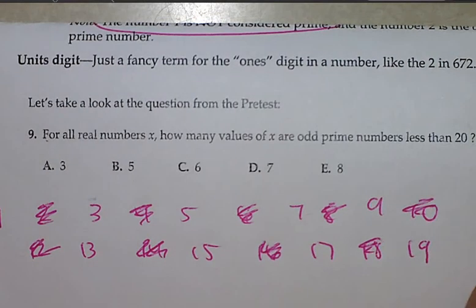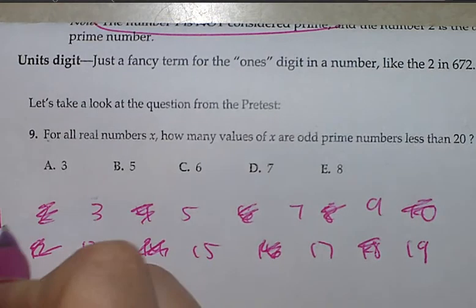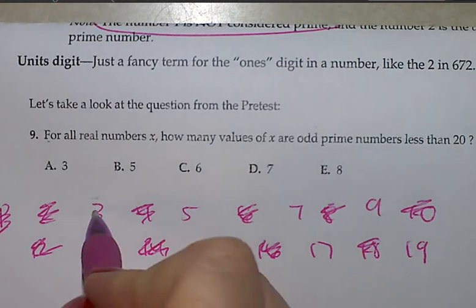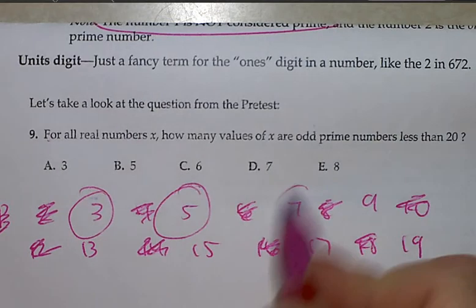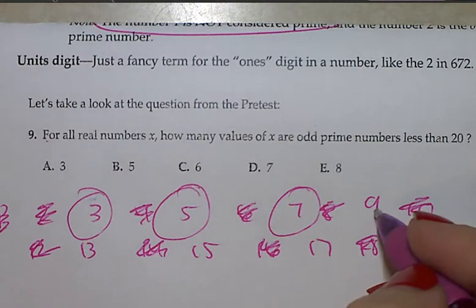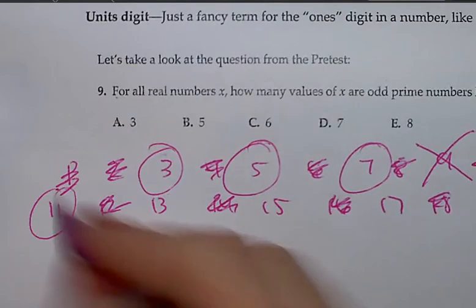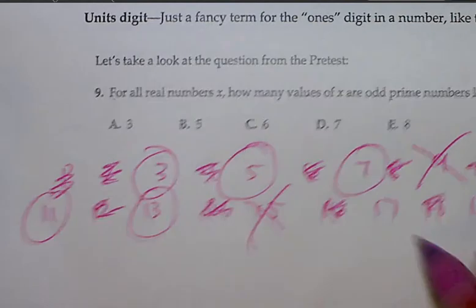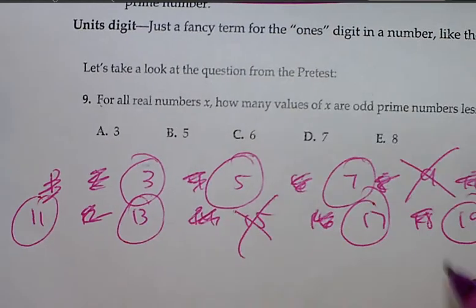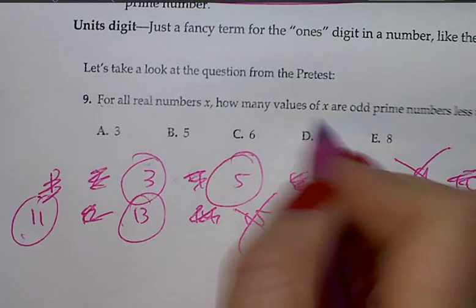And of the remaining numbers, I'm going to circle if it is going to be a prime number. We just stated 1 is not prime. Is 3 prime? The only way to achieve 3 is 1 times 3. 5 is prime, 1 times 5. 7 is prime, 1 times 7. 9 is not prime because it also includes 3 times 3. 11 is prime, 13 is prime, 15 is not because you have 3 times 5. 17 is prime and 19 is prime as well. 1, 2, 3, 4, 5, 6, 7. Correct answer is D.